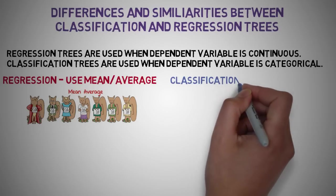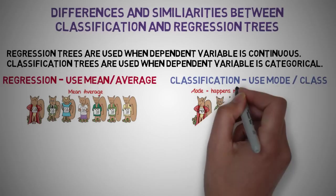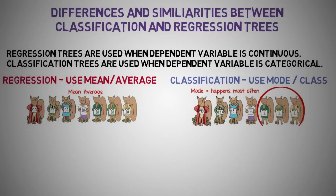Classification trees are used when the dependent variable is categorical. In case of classification trees, the value or class obtained by the terminal node in the training data is the mode of observations falling in that region. Thus, if an unseen data observation falls in that region, we'll make its prediction with a mode value.